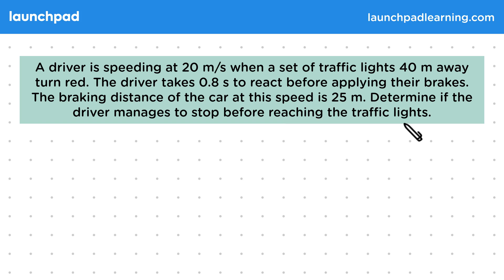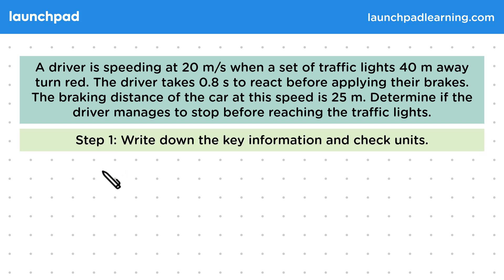Determine if the driver manages to stop before reaching the traffic lights. This seems like quite an involved example, so we should make sure to read the question carefully. Step one: write down the key information and check the units. This question is about stopping, so we'll need the thinking distance and the braking distance in order to find the stopping distance.